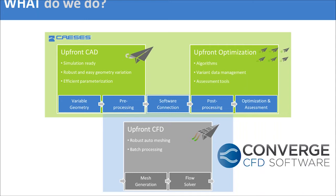One very important point: since we're automating the whole process and automatically generating geometry variants, we need a robust meshing method so all these geometry variants can be meshed. This is something that Converge CFD is very good at, and Sarang will tell more about this later on.